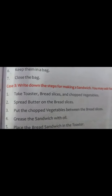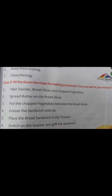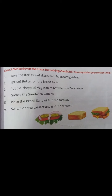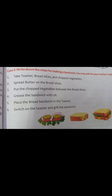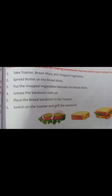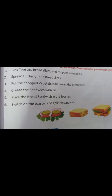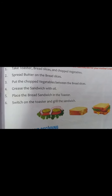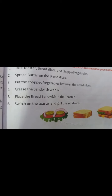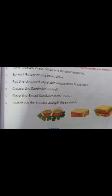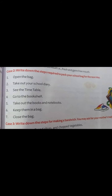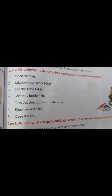As we can see from this picture. Now, Case two: write down the steps for making a sandwich. You may ask for your mother's help. First, take out the bread slices from the toaster and chop vegetables. Then spread butter on the bread slices according to your choice. Put the chopped vegetables between the bread slices, grease the sandwich with oil, place the sandwich in the toaster, switch on the toaster and grill the sandwich.